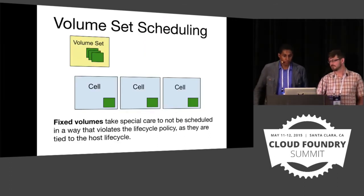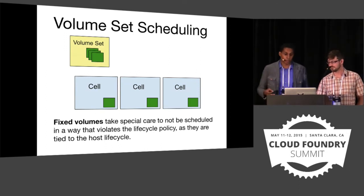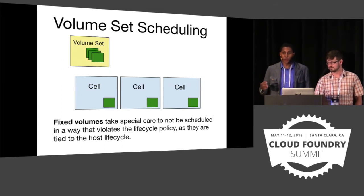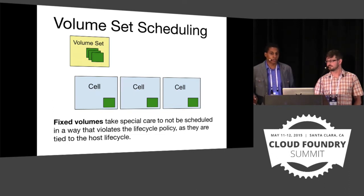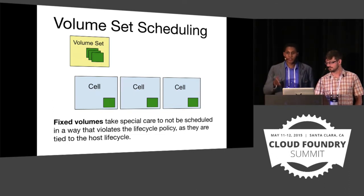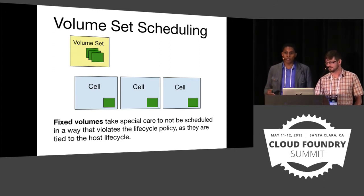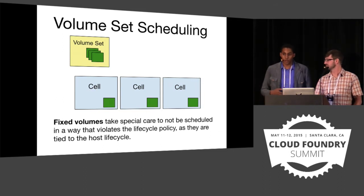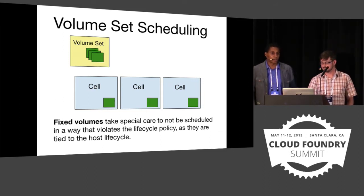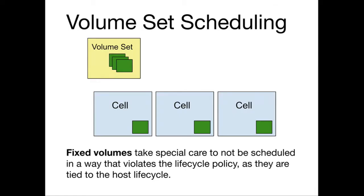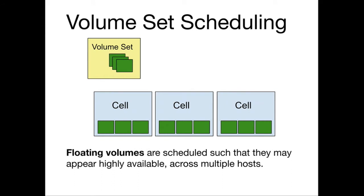Fixed volumes are scheduled on the cells where they'll be used because they're very close to the actual processes consuming them. It's important from an availability and fault-tolerance perspective to not land all volumes on the same host, so the scheduler will try to splat them across your available hosts for a highly available, fault-tolerant solution. Floating volumes, because they could be backed by network storage, can appear on any of the cells. So when the scheduler is looking at how to schedule applications, it has a much wider choice because all floating volumes are available on any of the cells.